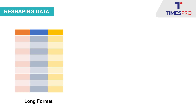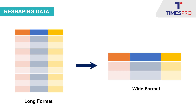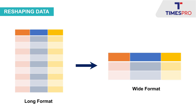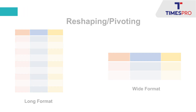Another kind of data wrangling operation is called reshaping. Usually, data is stored in a long format — that is, more rows and fewer columns — but this is not a human-readable format. To make data readable, we need to reshape it into a wide format. This process is called reshaping or pivoting.